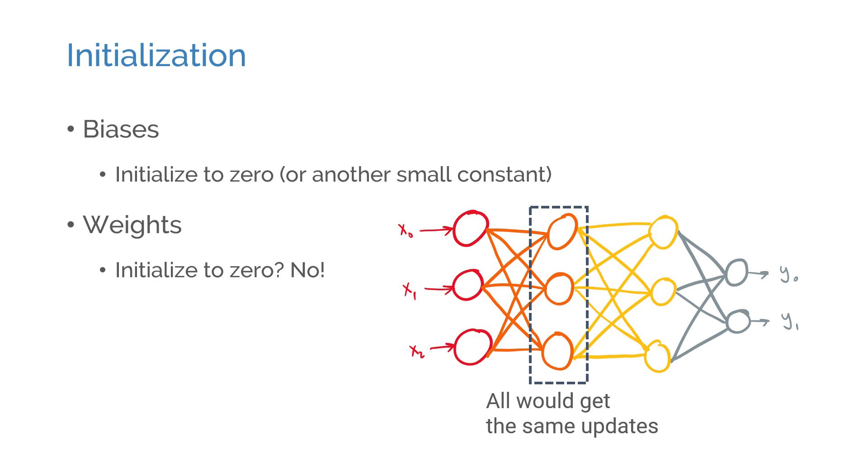Ideally, we would prefer each neuron to learn something different to be useful. To do that, we need to initialize the weights in a way that breaks the symmetry, so that each neuron gets a different update during training. Initializing the weights randomly usually works fine, although it doesn't guarantee an absolute asymmetry.